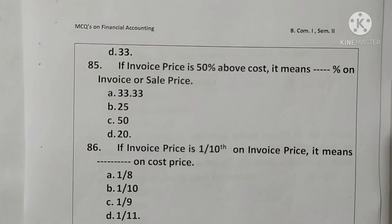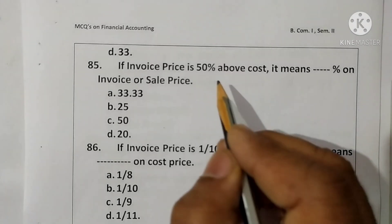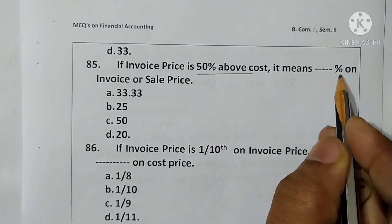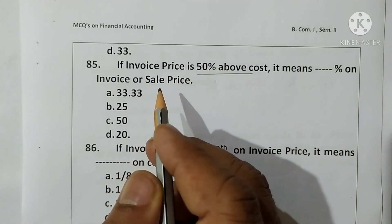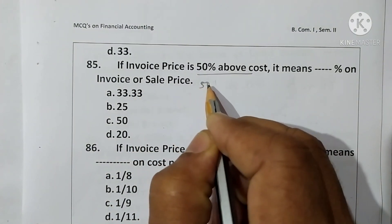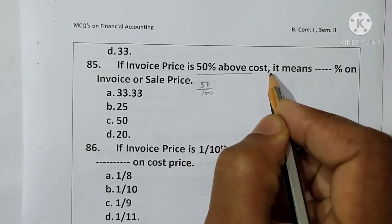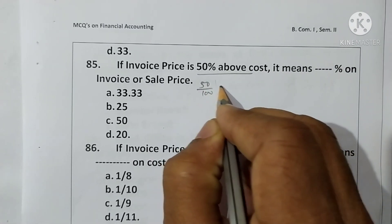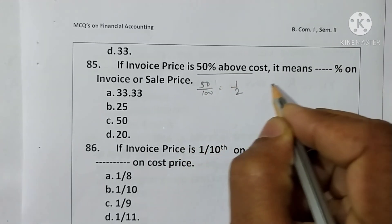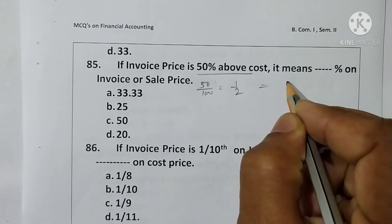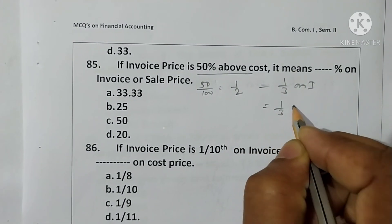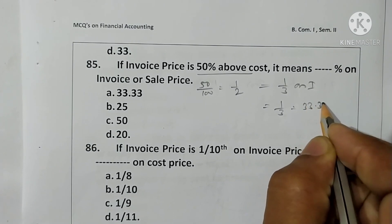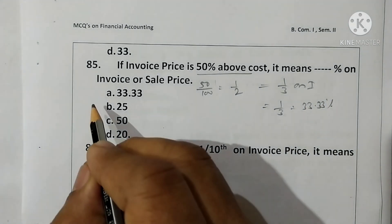Question 85: If the invoice price is 50% above cost, what is the percentage on invoice price? Here 50% on cost price means one-half on cost price, which means one-third on invoice price. One-third means 33.33%. Option A is correct.